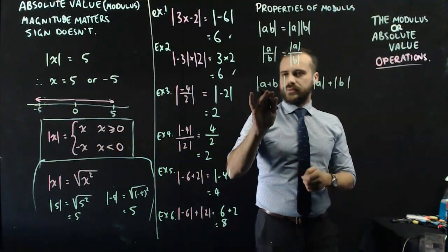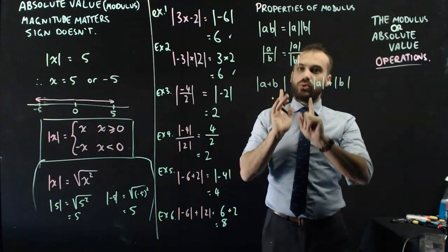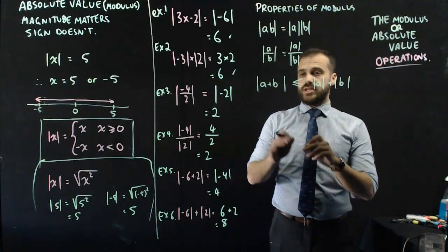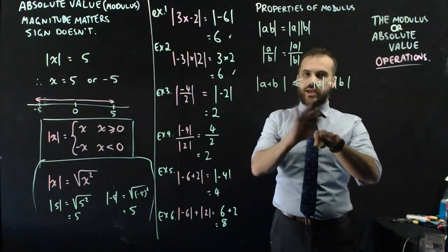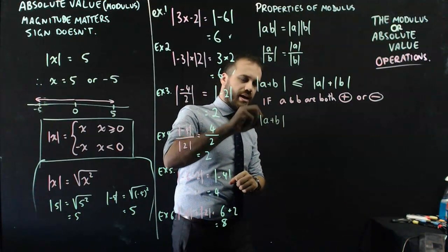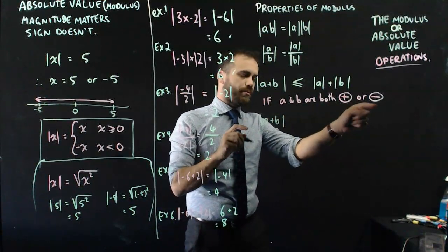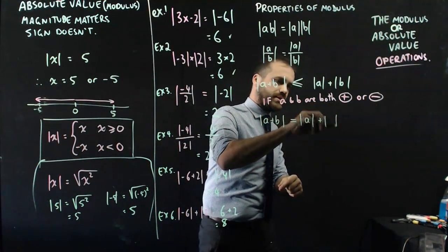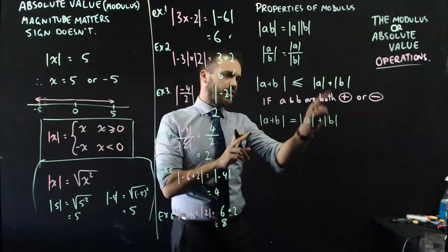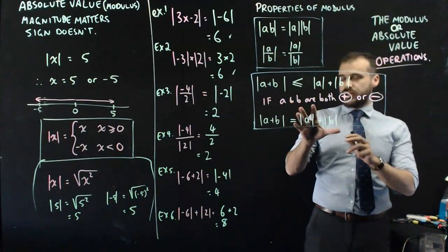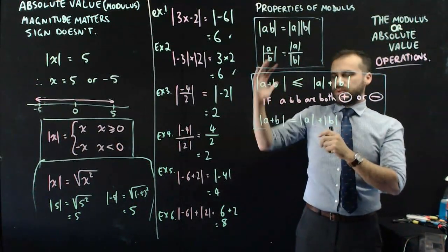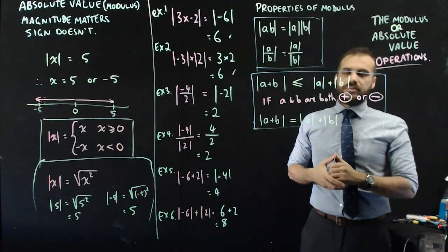This one is a bit of a weird one. We have the magnitude of A plus B versus the magnitude of A plus the magnitude of B. What can we say about these two? The absolute value of A plus B is always going to be less than or equal to the magnitude of A plus the magnitude of B. I'm not going to prove that here, but it's interesting to explore. A good hint: the absolute value of A plus B equals the absolute value of A plus the absolute value of B only if A and B are both positive or both negative. That's as far as I want to go with this video. We'll jump into more examples of solving absolute value functions and then start looking at some inequalities as well.